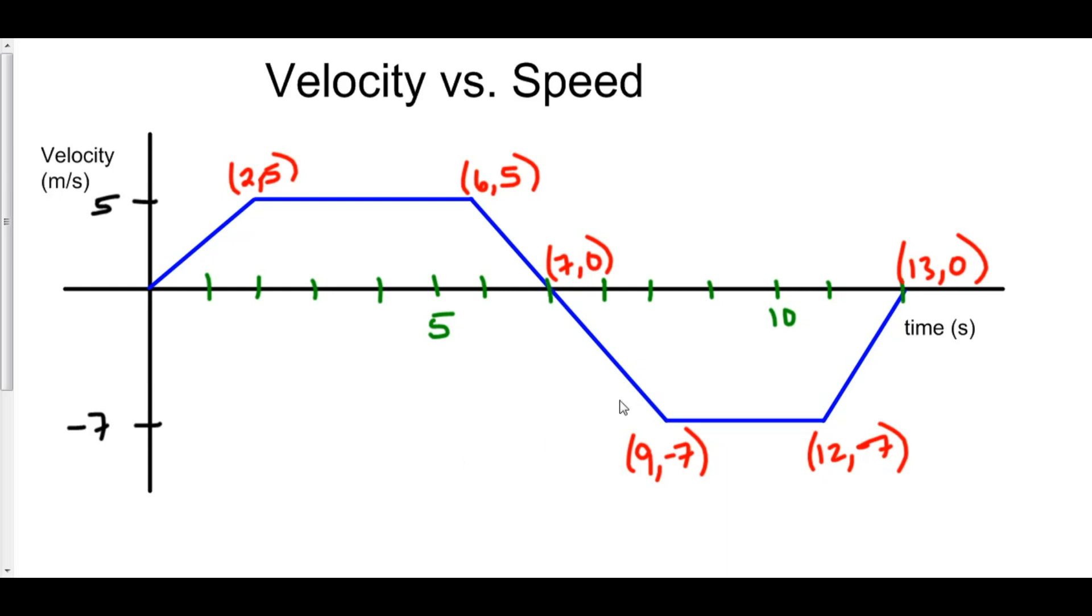Now what does it mean to have negative velocity? Well, negative velocity means that you are moving in the negative direction. So what happened here was you were moving in the positive direction, to the right or up, since we're in one variable.